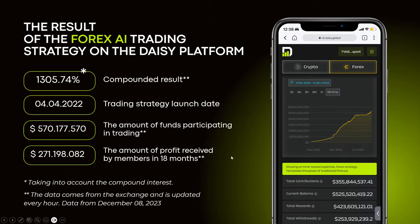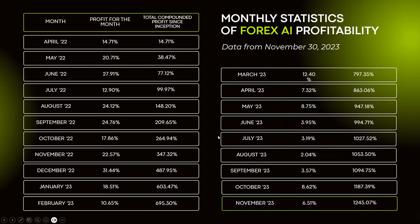It's been 20 months since Forex launched. If you were compounding from day one to today, you would have seen a 13x on your trading balance — 1,300% compounded result since Daisy Forex launched. As of December 8th, the trading balance or fund size is currently $570 million, and $271 million have been withdrawn by members.